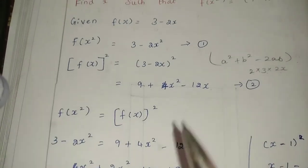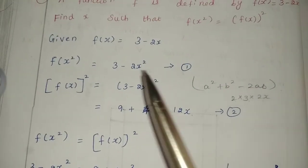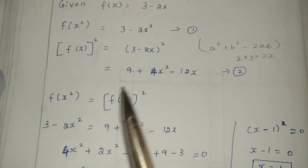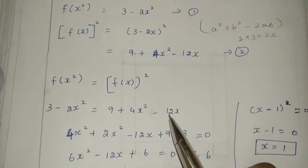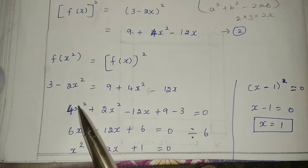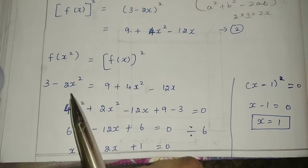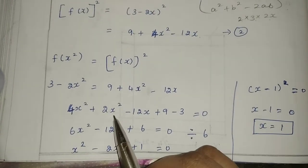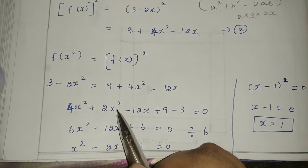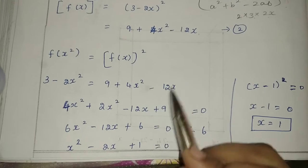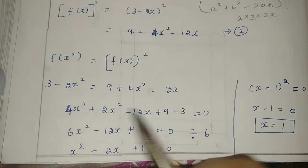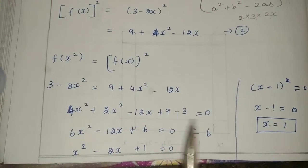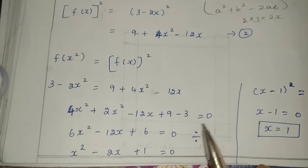Now the two sides are equal. Setting f of x squared equal to f of x whole square: 3 minus 2x squared equals 9 plus 4x squared minus 12x. Rearranging, we collect all the powers. 4x squared minus x squared gives 3x squared, and we move terms: minus 2x squared equals zero after rearranging.